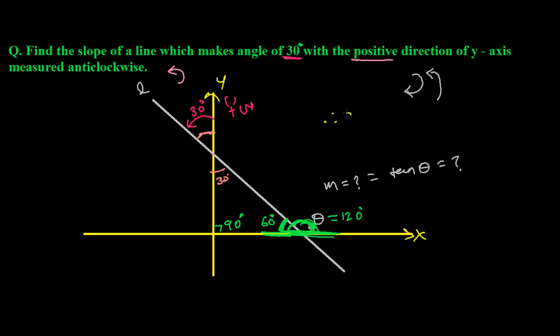Therefore, the slope of the line m is equal to tan 120 degrees, and tan 120 degrees is minus root 3. And that's our answer.